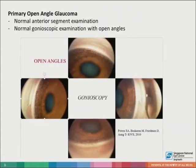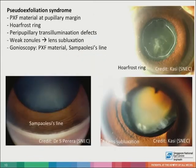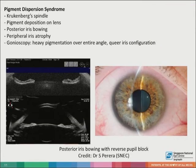In primary open angle glaucoma, one will expect a normal anterior segment and a gonioscopic examination with open angles. Features of pseudoexfoliation syndrome include dandruff-like material at the pupillary margin and a hoarfrost ring, more obvious in dilation. Pupils are often poorly dilating, with peripupillary transillumination iris defects; zonules are often weak with associated phacodonesis and lens subluxation. In pigmentary dispersion syndrome, signs include Krukenberg spindle and pigment deposition on the lens, posterior iris bowing, peripheral iris atrophy, and heavy pigmentation of the entire angle on gonioscopy.